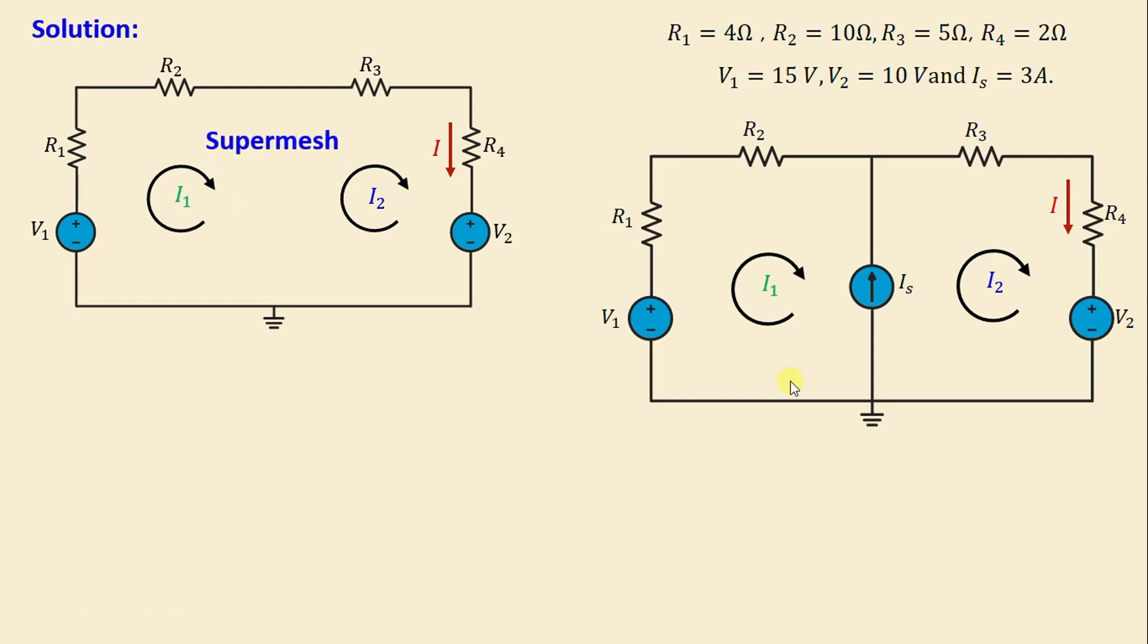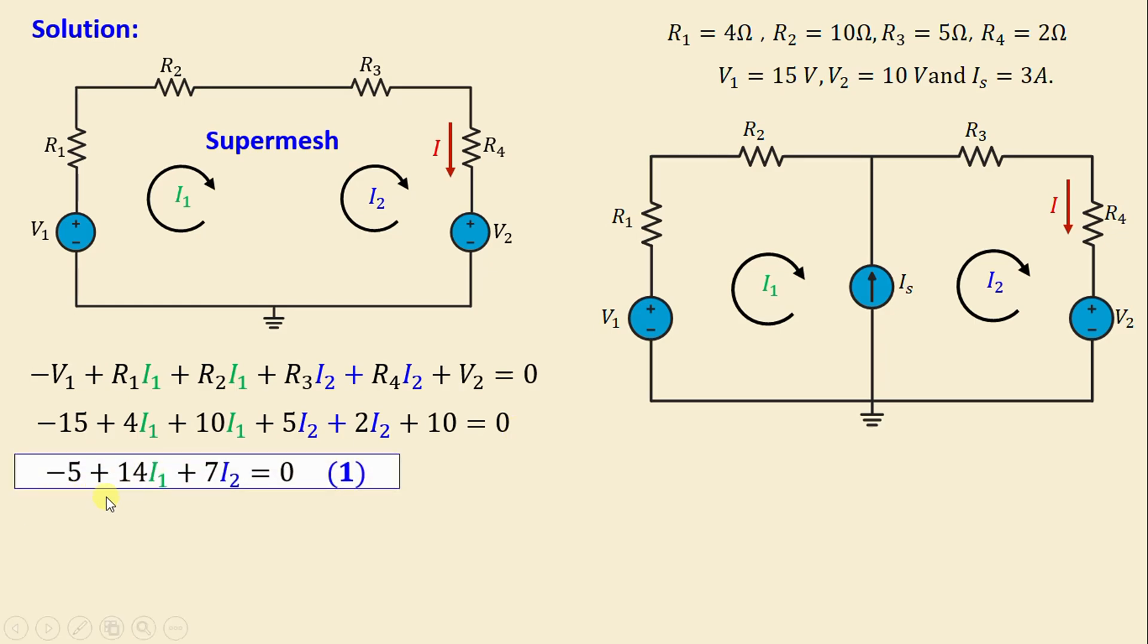Now we will apply KVL in the supermesh. We obtain negative V1 plus R1 I1 plus R2 I1 plus R3 I2 plus R4 I2 plus V2 equals 0. By replacing the resistors and voltages with their numerical values we obtain negative 15 plus 4 I1 plus 10 I1 plus 5 I2 plus 2 I2 plus 10 equals 0. If we continue simplifying this equation we obtain negative 5 plus 14 I1 plus 7 I2 equals 0, and I will call this equation 1.